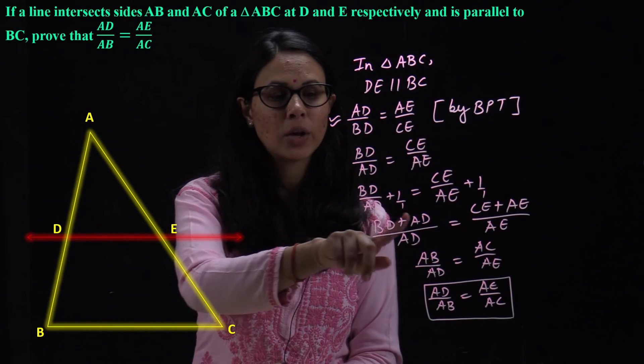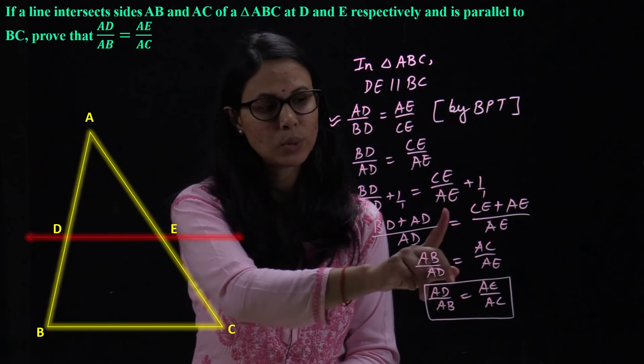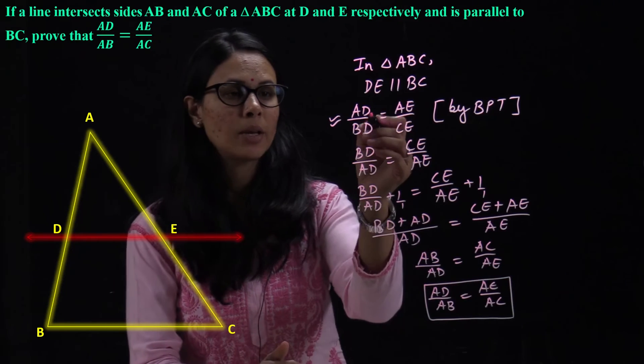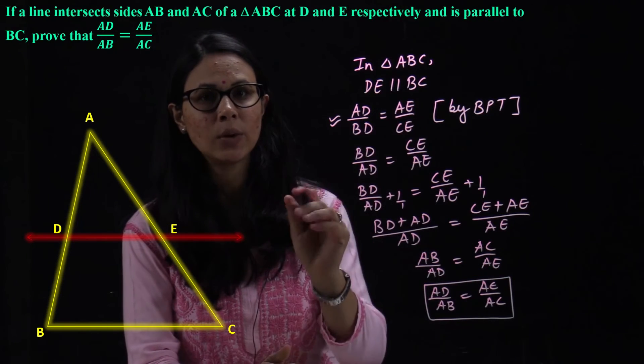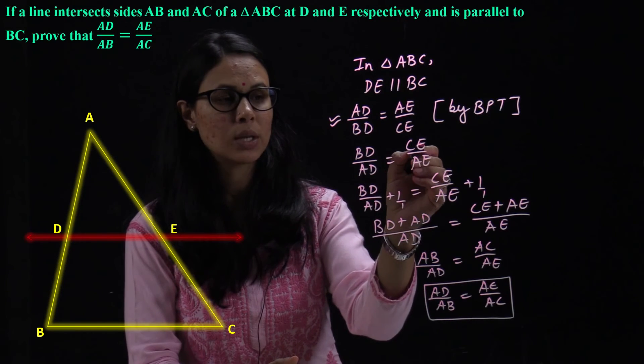And, BD when added with AD will become AB, and it will be removed from here. Similarly, CE when added with AE will become AC, and it will be removed from here. Now, the condition we had taken, we reciprocal on both sides, then we got BD upon AD is equal to CE upon AE.